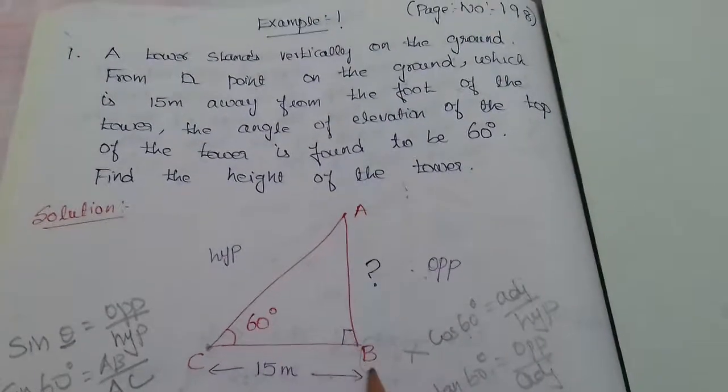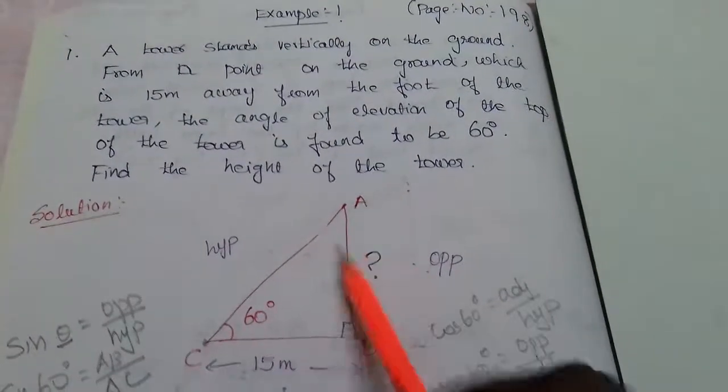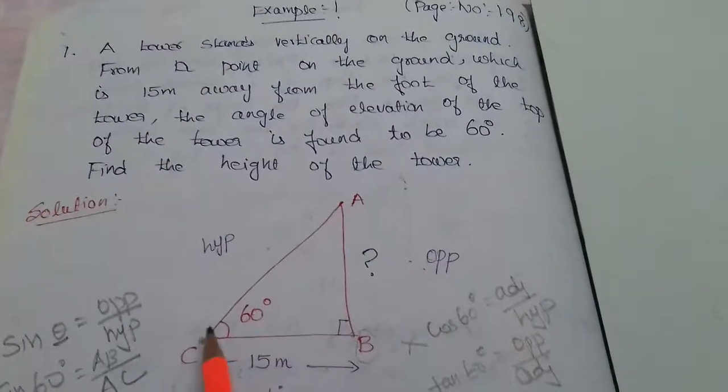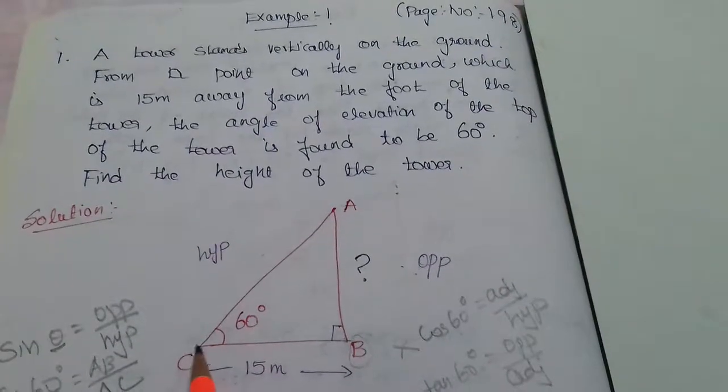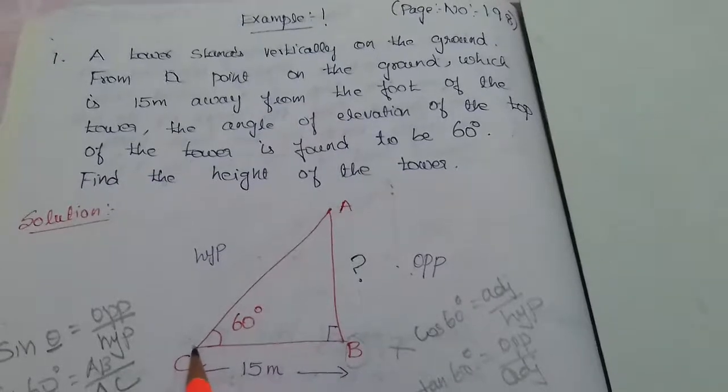BB is the foot of the tower. AB is the height of the tower. So this ground level is BC. The angle of elevation to the top of the tower is 60 degrees.